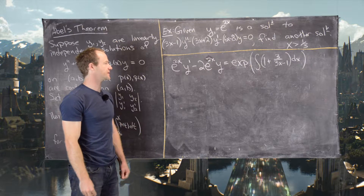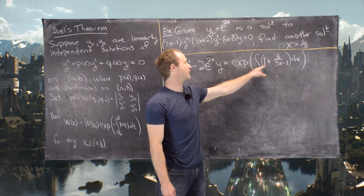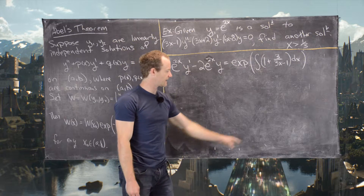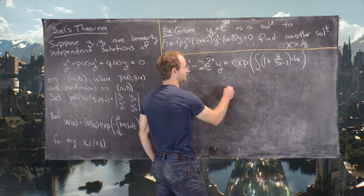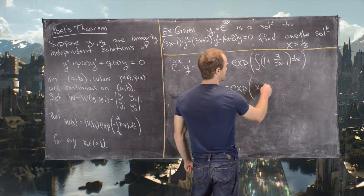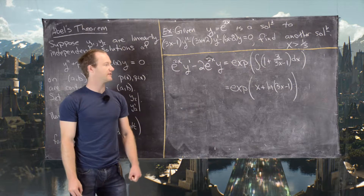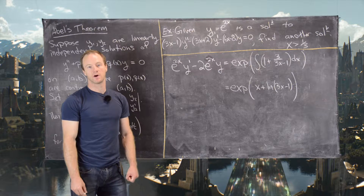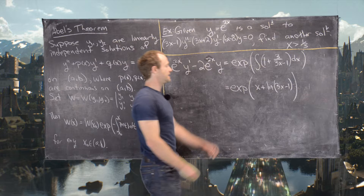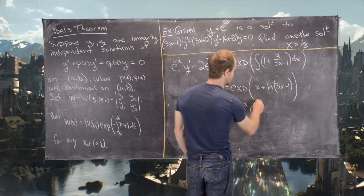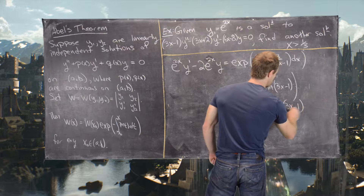Picking up from that step: e^{2x}y′ − 2e^{2x}y equals the exponential of the antiderivative of 1 + 3/(3x − 1). Taking that antiderivative gives the exponential of x + ln|3x − 1|. We can verify this by checking that the derivative of ln|3x − 1| is 3/(3x − 1) via the chain rule. This simplifies to e^x · e^{ln(3x−1)} = (3x − 1)e^x.